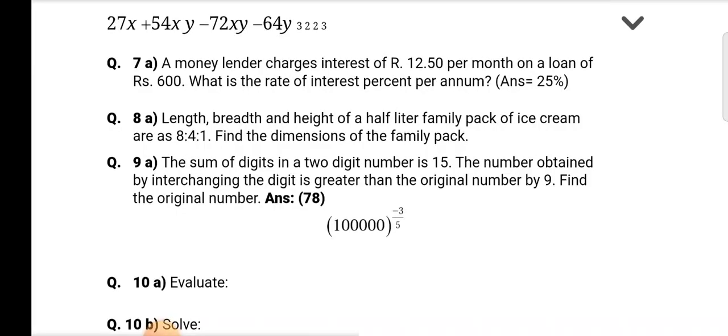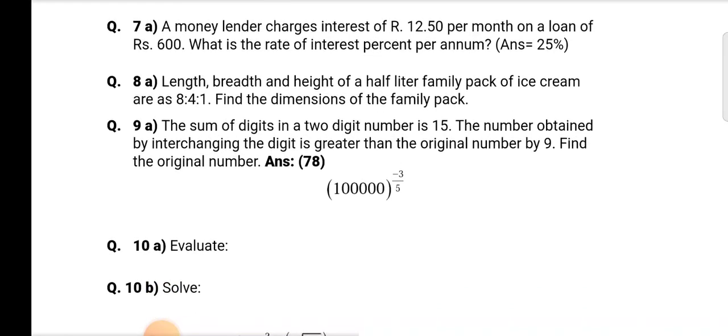Question 9a: The sum of digits in a 2-digit number is 15. The number obtained by interchanging the digits is greater than the original number by 9. Find the original number. Answer is 78. Now evaluate in the bracket: 1 lakh raised to minus 3 by 5.